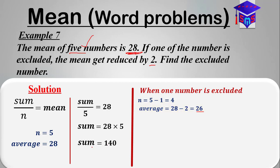If the sum of the five numbers is 140 and one number is subtracted or excluded, the sum is going to reduce by a certain number which we don't know. Our new sum is 140 minus y, where y is the number that is excluded.